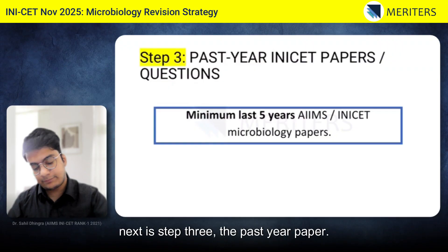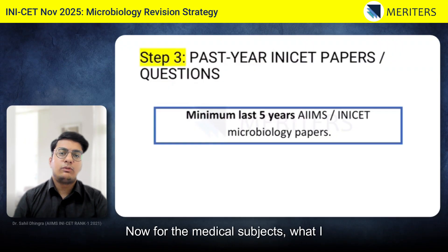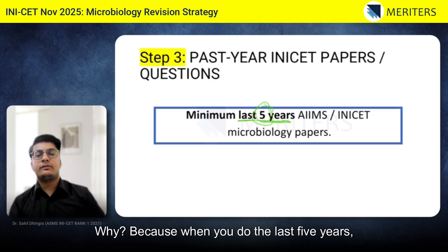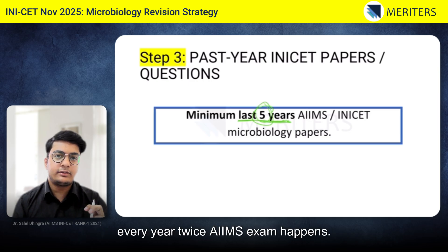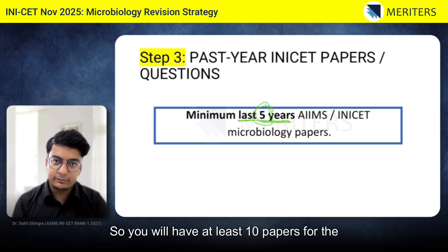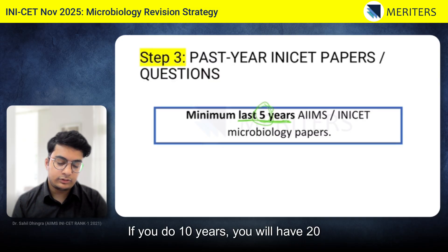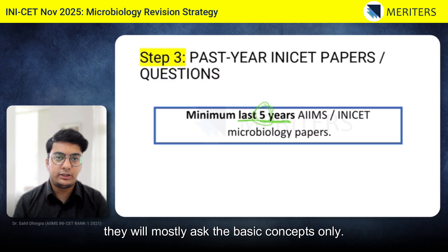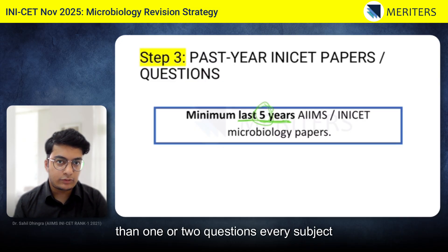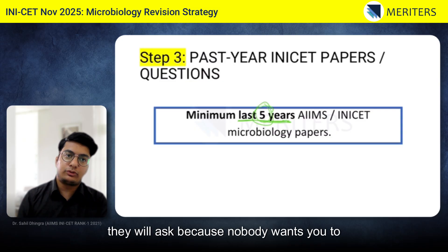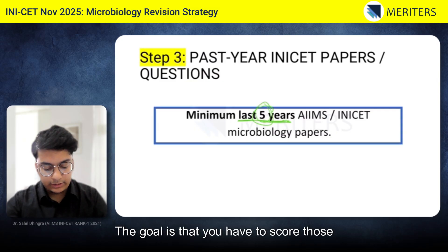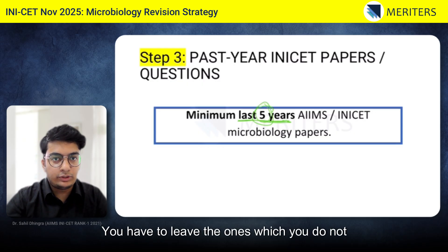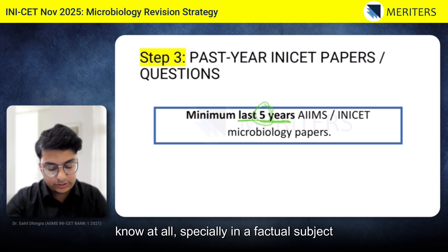Next is step three — past year papers. For medical subjects, I recommend doing the last five years, not necessarily 10 years. Every year AIIMS exam happens twice, so you will have at least 10 papers. For dental, if you do 10 years, you will have 20 papers. In the medical subjects, they will mostly ask basic concepts only and not go much into detail. Every subject, they ask a few questions because nobody wants you to score 100%. The goal is to score those four to five basic questions and not over-attempt, especially in a factual subject like micro.